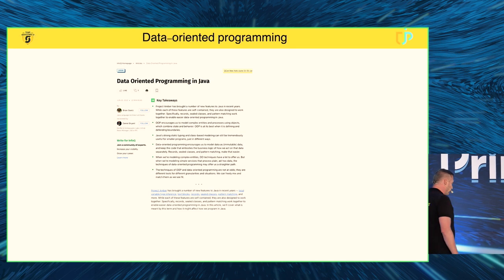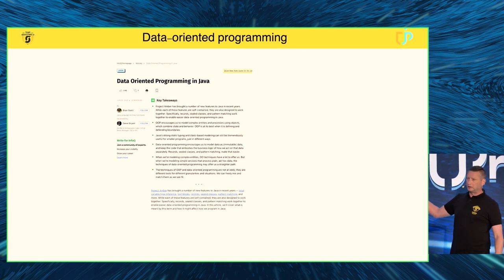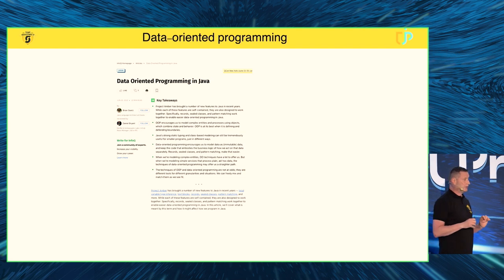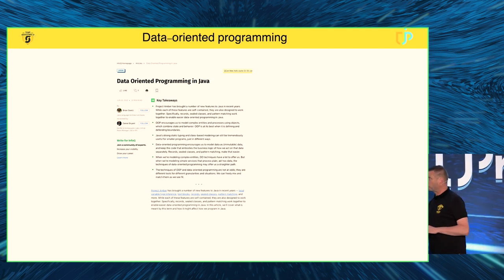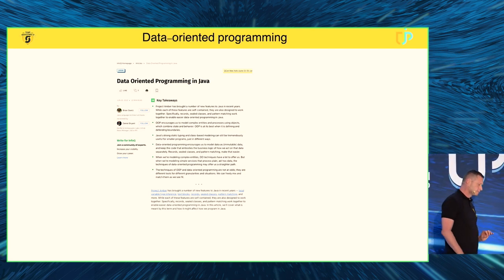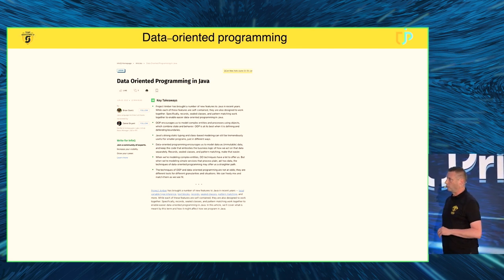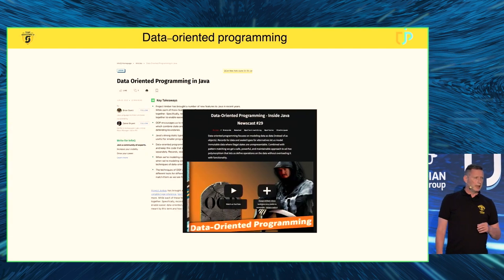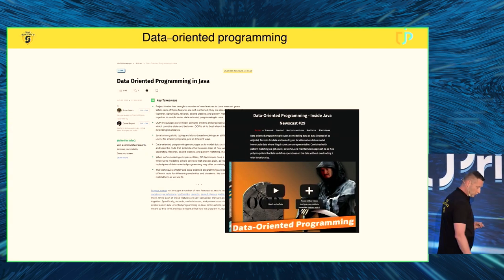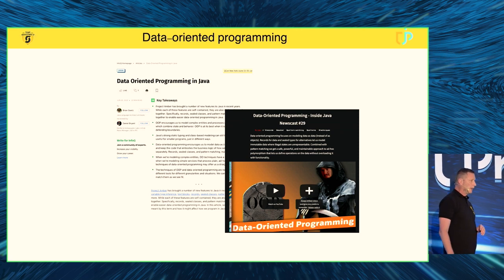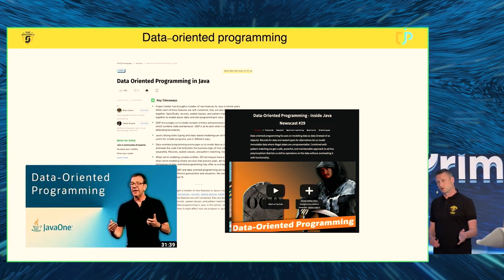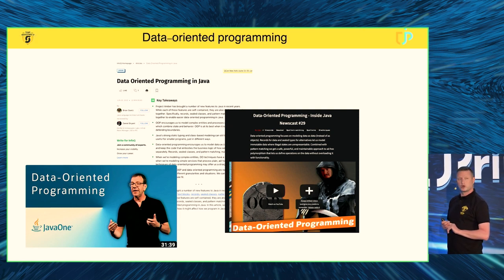Data-oriented programming became very popular, and this was the article that really kicked it off. Brian Goetz — the chief language architect for Java at Oracle — wrote an article called 'Data Oriented Programming in Java' on InfoQ. It's a really great article. Since then, Java has given it a lot of attention. The Java Newscast had a series about it, and at JavaOne, Gavin Biermann also gave a presentation about data-oriented programming.